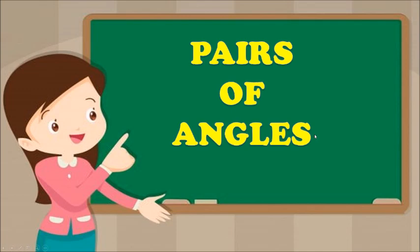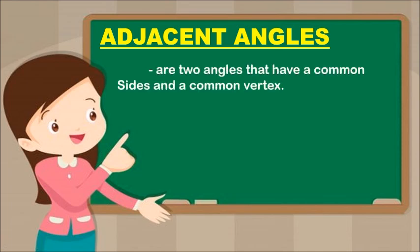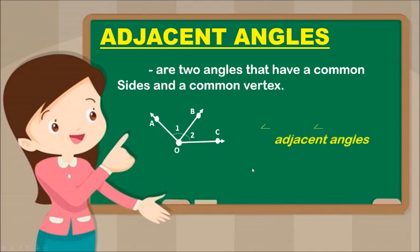Next is a pair of angles. Adjacent angles are two angles that have a common side and a common vertex. Angle 1 and Angle 2 share a common side and a common vertex, so Angle 1 and Angle 2 are adjacent angles.